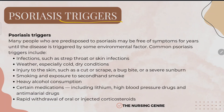Many people who are predisposed to psoriasis may be free of symptoms for years until the disease is triggered by some environmental factor. Common psoriasis triggers include infections such as strep throat or skin infections, cold and dry conditions, and injury to the skin such as a cut, scrape, bug bite, or severe sunburn.